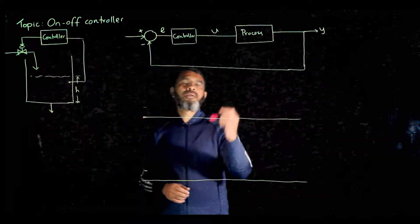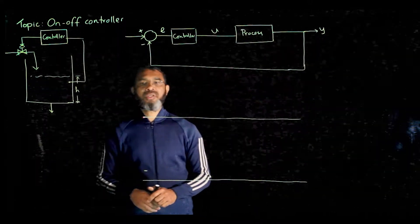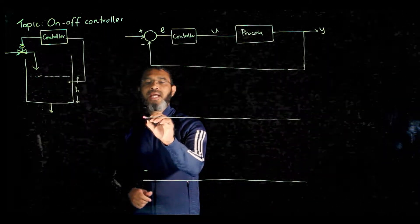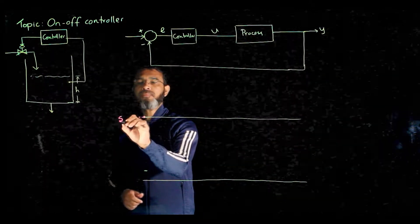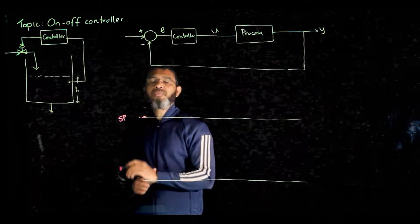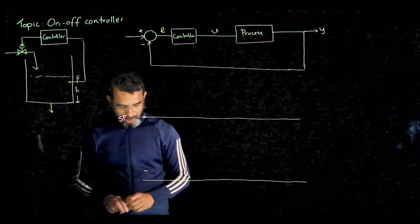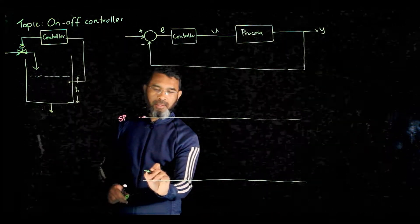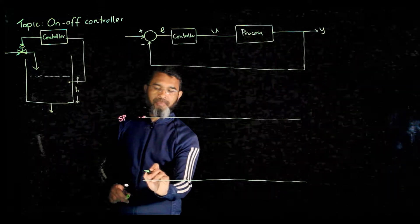Look at the feedback diagram for the same process. Currently, the level is at the desired value - this is the set point. The level is at the desired value and the control valve is fully open.